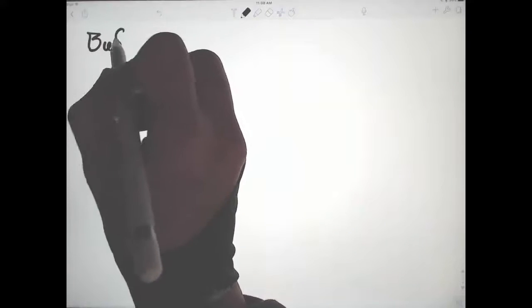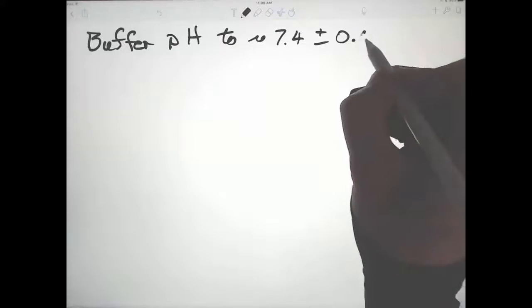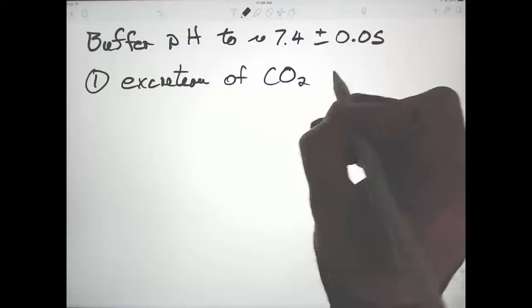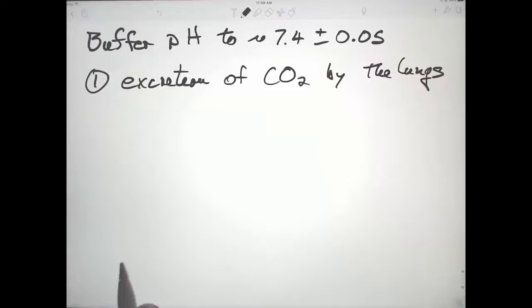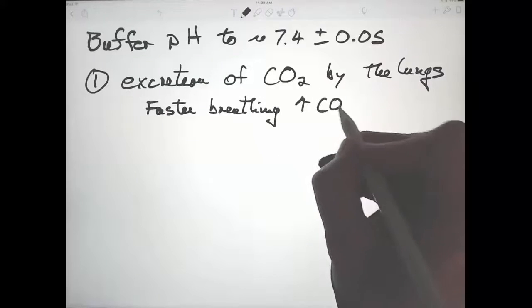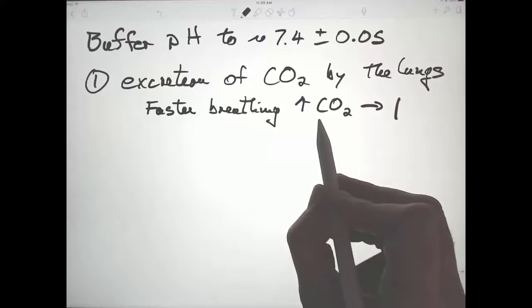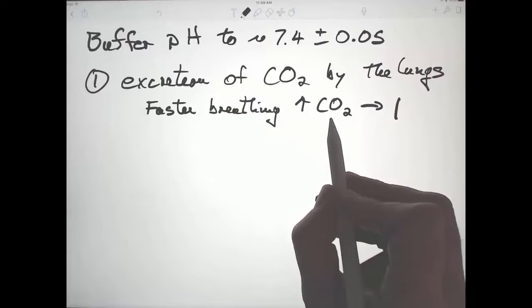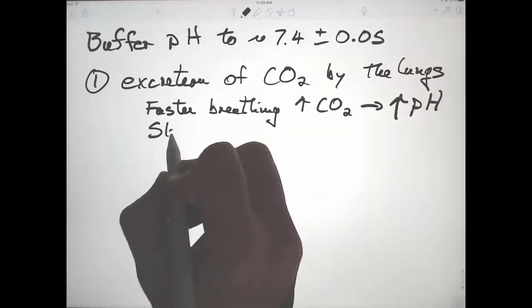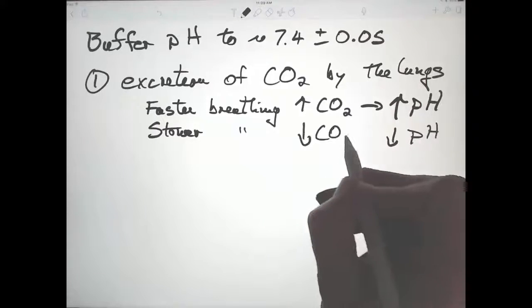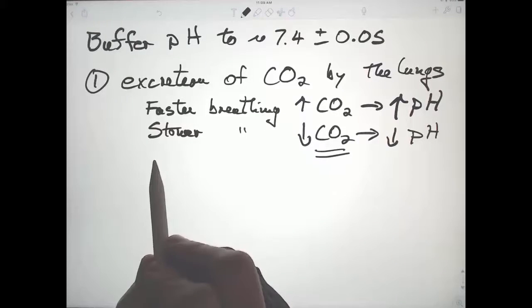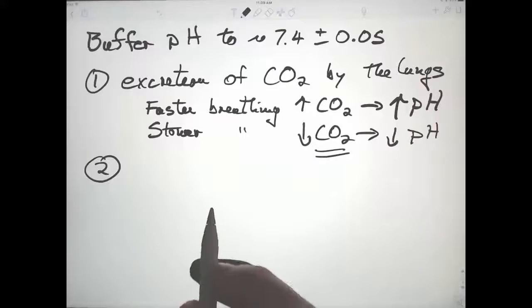How do we buffer pH? There are three major mechanisms of balancing pH. The first one is excretion by the lungs. That's the process we just talked about. Faster breathing increases CO2 loss. Remember, CO2 is directly related to acidity. So as you get rid of CO2, you become less acidic. You increase pH, make the blood more basic. Slower does the opposite. You adjust your breathing rate to maintain concentrations in the blood that maintain normal blood pH. And you're doing that all the time.